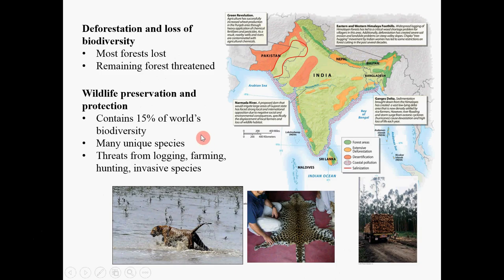A related issue is the loss of wildlife. South Asia has many very unique species of animals, but those animals are also under threat. People kill them for skins, other body parts, and sometimes even just for meat. This is a photograph of Bengal tigers — a very unique species of tiger that lives in this area and can survive on salty sea water. But now they are under threat because of logging, farming, hunting, and also invasive species.